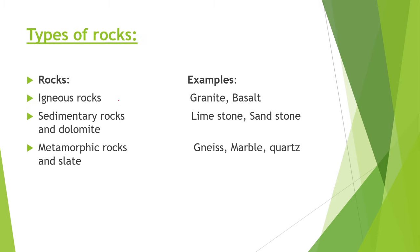Next point is types of rock. Mainly rocks are three types: igneous rock, sedimentary rock and metamorphic rock. Igneous rock is formed from magma's solidification. Sedimentary rock is formed from decomposition and sedimentation of minerals and organic matter. Metamorphic rock is formed when igneous and sedimentary rocks undergo chemical and physical changes. Examples of igneous rock are granite and basalt. Examples of sedimentary rock are limestone, sandstone and dolomite. Examples of metamorphic rock are gneiss, marble, quartz and slate.